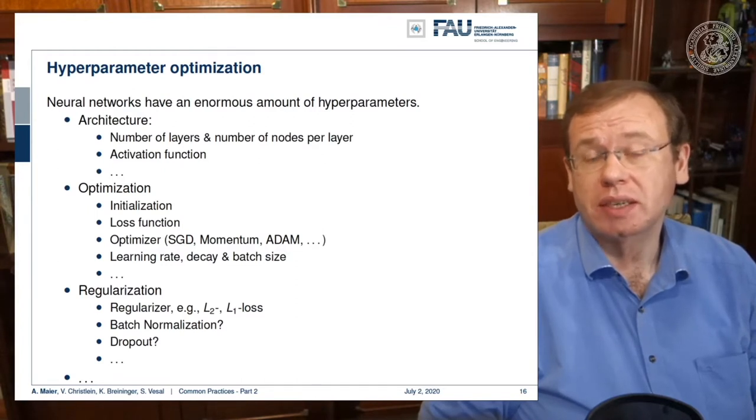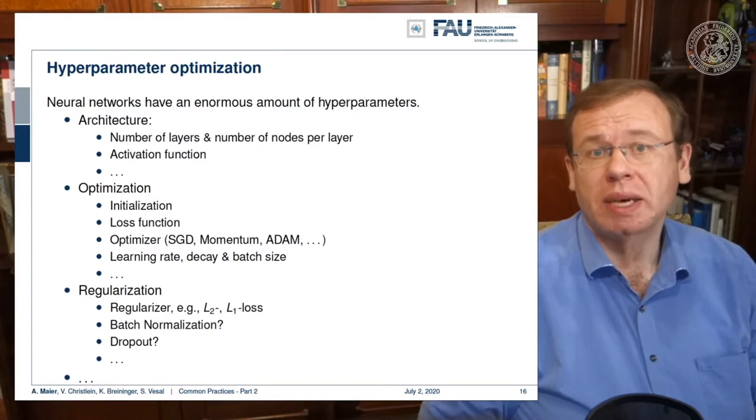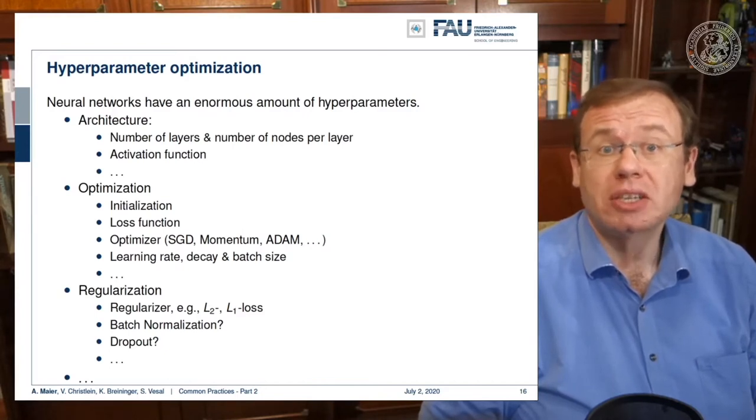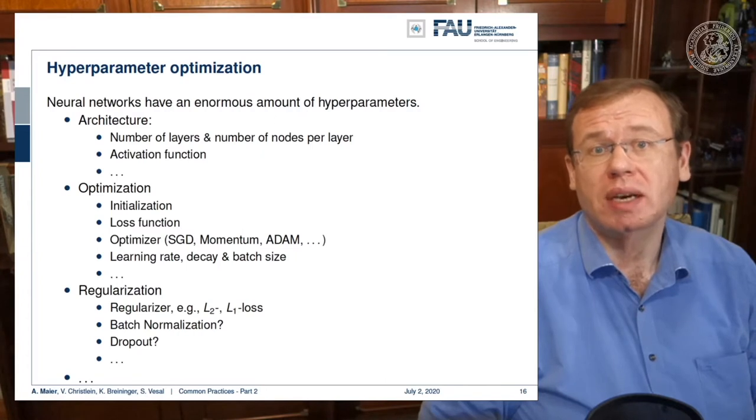You have all the parameters in the optimization: the initialization, the loss function, and many more. The optimizers still have options like the type of gradient descent, momentum, learning rate, decay, batch size. In regularization, you have different regularizers, L1 and L2 loss, batch normalization, dropout, and so on.